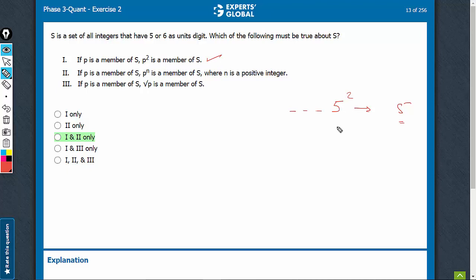Look at statement 2. Same with 6 also. I must have taken that case also. If a number ends with 6, 6 square also ends with a 6. So all such numbers are going to be a part of the set.